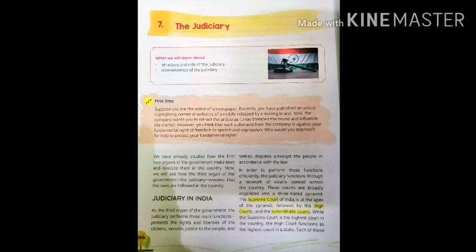Hello students, hope you all are doing good. Today we are going to start with chapter number 7 of civics, that is judiciary. Here we will be coming to know about the judicial system, courts and their composition, tenure and removal, their characteristics and their importance. In the first two chapters we have already studied about the legislative and executive organs of our country, so now it's time to know about the third organ, the judiciary, and how it works in India.